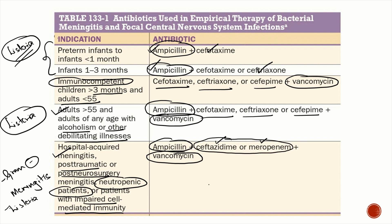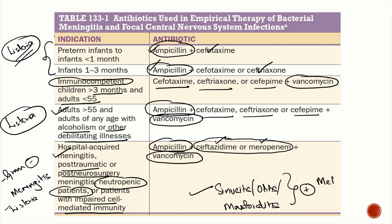For patients with sinusitis, otitis, or mastoiditis — any ENT infection — add metronidazole to the usual empirical antibiotic therapy to cover anaerobic organisms.